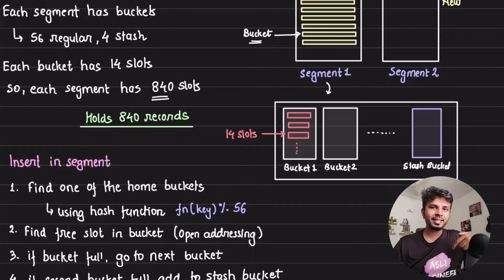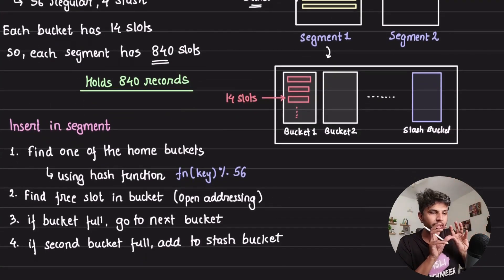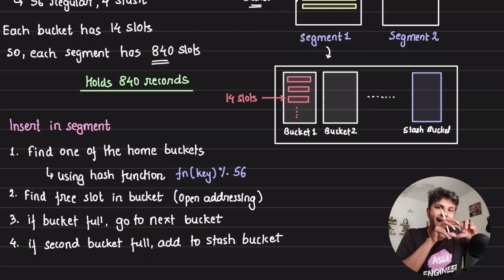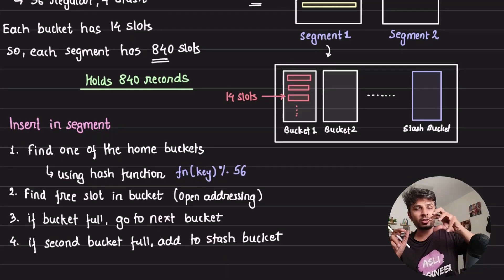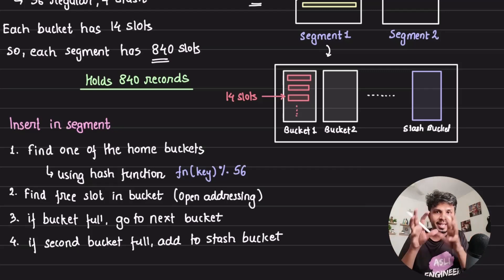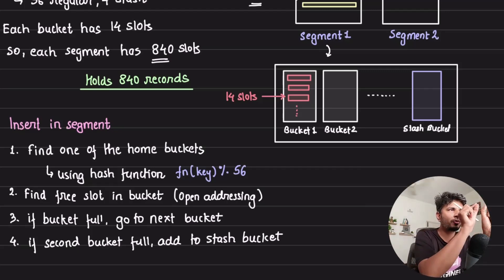Now how does insert work in the segment? We saw insert work in hash table where we just said it will insert in the segment. Now going deeper into how the insertion happens at the segment level. Whenever I'm trying to insert a particular key in my segment, I would find one of the home buckets.